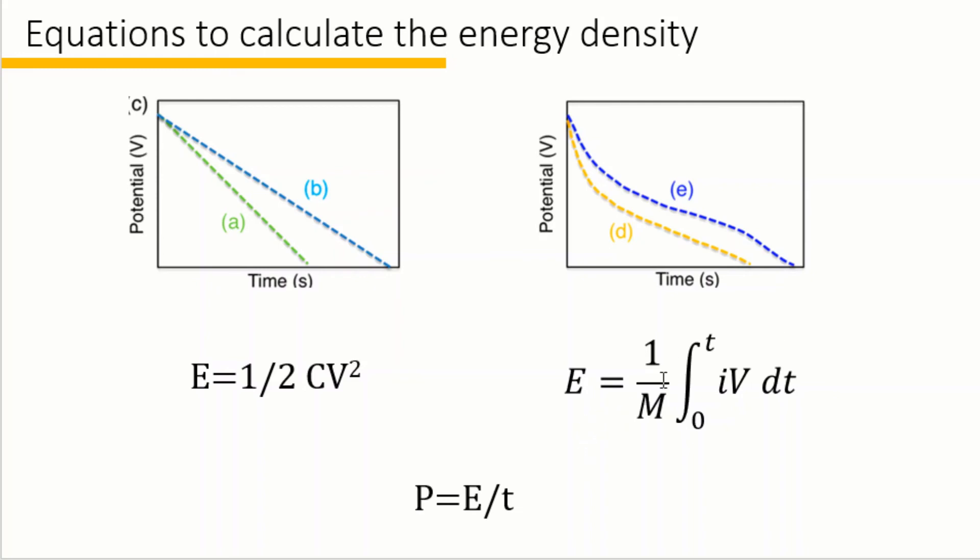That is E equals 1 over m integral from 0 to t i v dt. The mass used to calculate the energy should be the total mass of both positive and negative electrodes. In terms of calculating the energy density of the device, then m should be the mass of the total device.